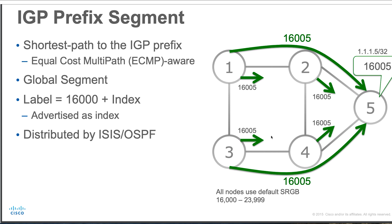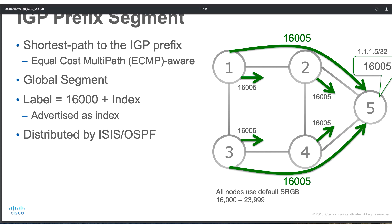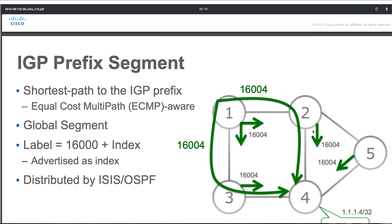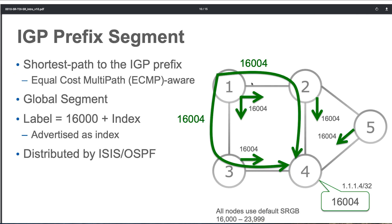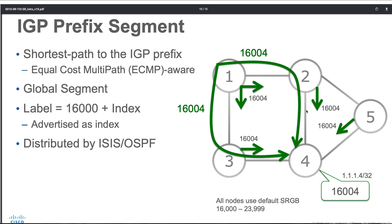Router 5's prefix SID is 16,005 — the base is 16,000 and the index value is 5. In the second example, Router 1 has two potential paths to reach Router 4: via 2→4 or via 3→4. The shortest IGP path is ECMP-aware, so traffic can take either path. 16,004 is the prefix SID for Router 4, and it is unique in this topology — no other node has 16,004 as its prefix SID.